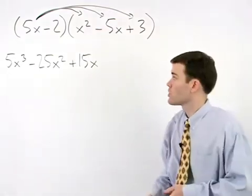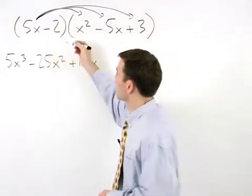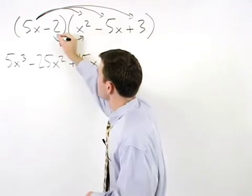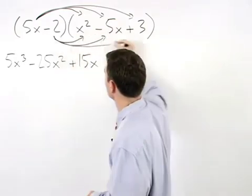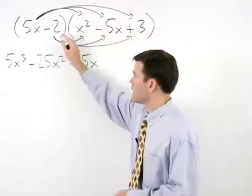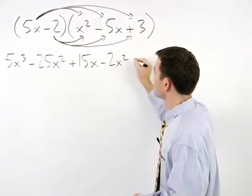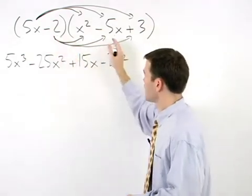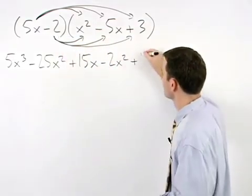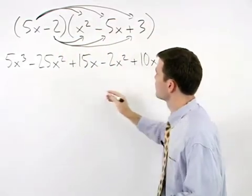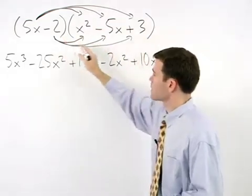Next, we would distribute the negative 2 through all three terms inside the parentheses to get negative 2x squared plus 10x minus 6.